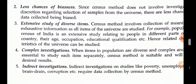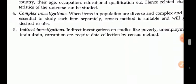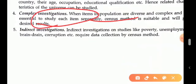Third, extensive study of diverse items is possible in the census method — items of different natures can be studied. For example, during a census, apart from counting members, information about their age, occupation, and health can also be collected. Fourth, for complex investigations where items in the population are diverse and complex, it is essential to study each item separately.